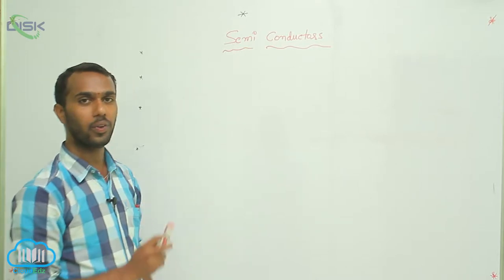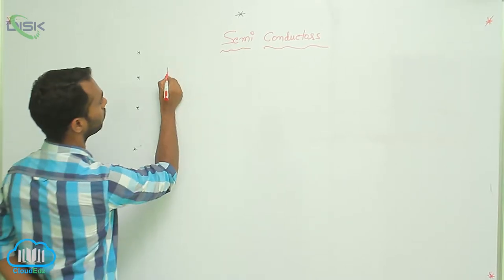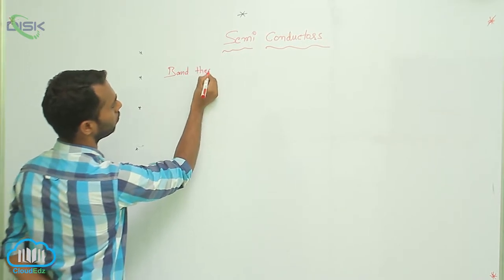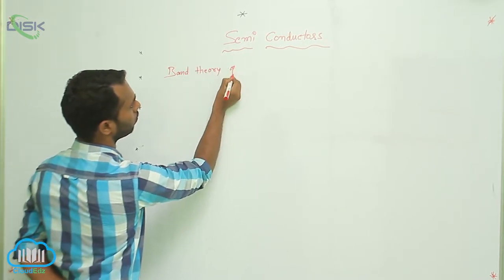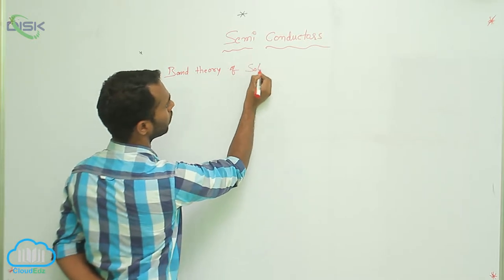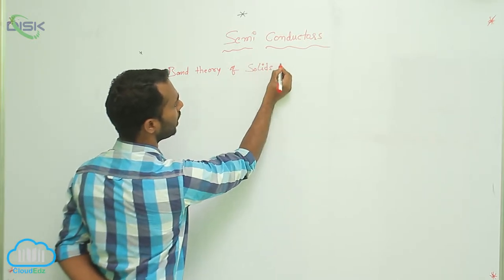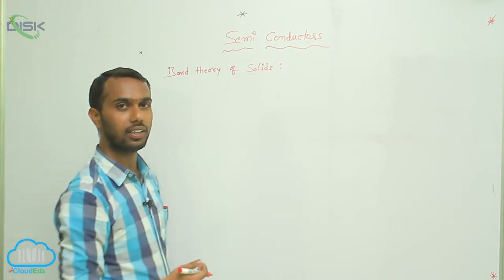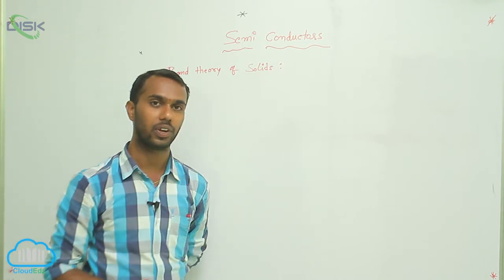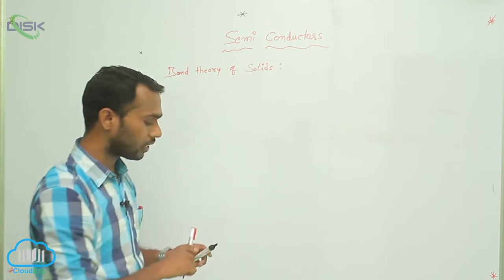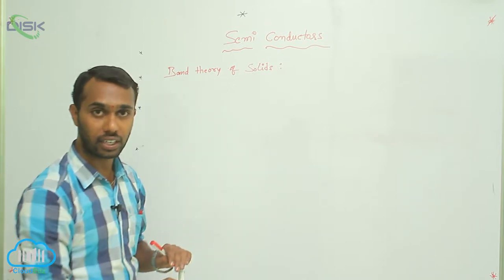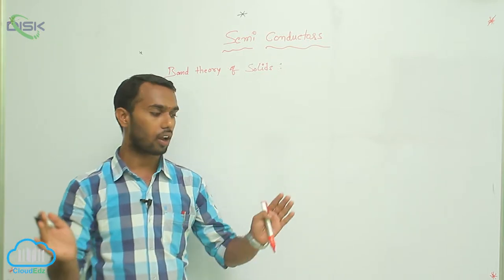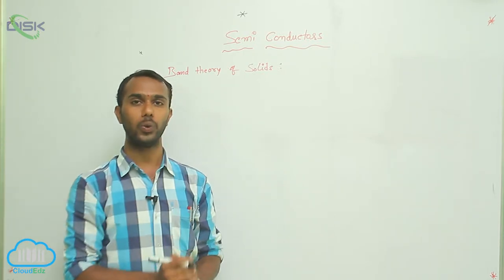Band theory of solids gives the explanation about conductors, semiconductors, and insulators. To understand the band theory, we need to look at solid structure. In solids, atoms are arranged very close to each other.